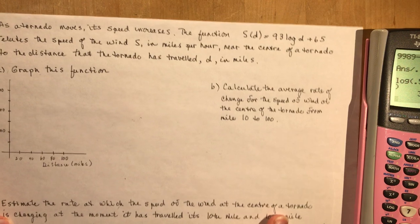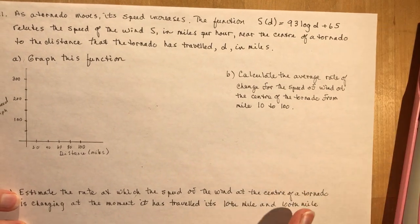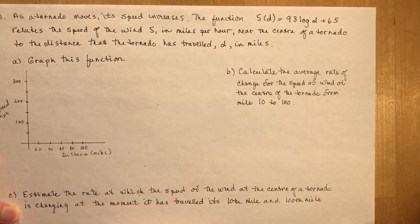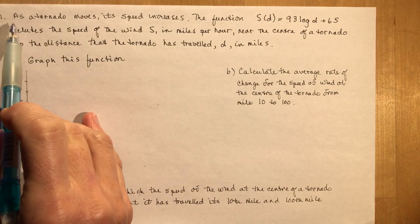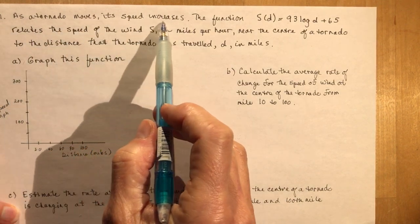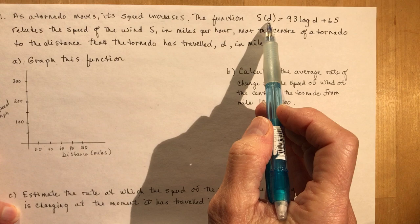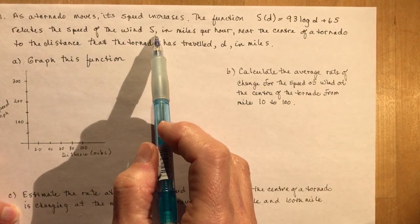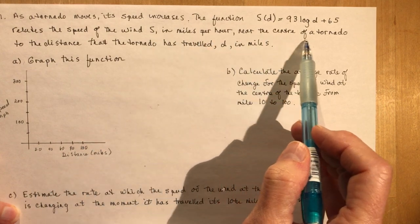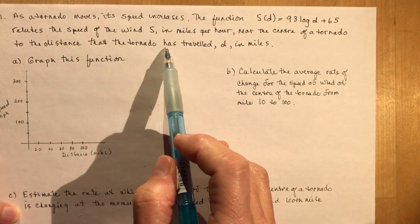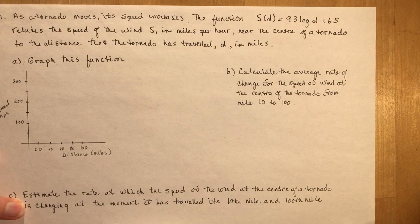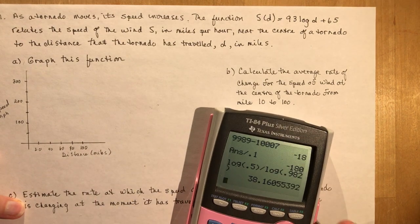Just a little side note — this is the fourth time I've tried to do this lesson; I have a really bad cold. As a tornado moves, its speed increases. The function S(D) equals 93 log D plus 65 relates the speed of the wind S in miles per hour near the center of a tornado to the distance the tornado has traveled D in miles. This obviously came from an American textbook, and I'm surprised they didn't convert everything to kilometers per hour. The first thing says graph this function.